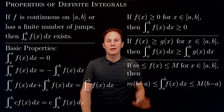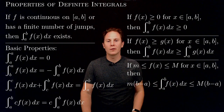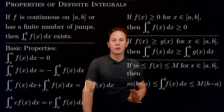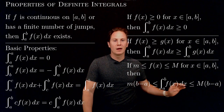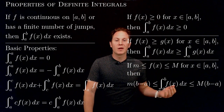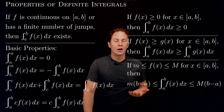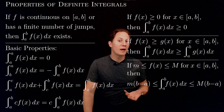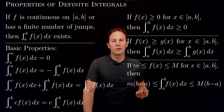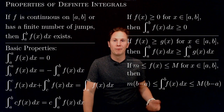If f(x) is between some minimum and maximum values, little m and capital M, along this closed interval, then the definite integral of f(x) from a to b is greater than or equal to m times (b minus a) and less than or equal to M times (b minus a). This expresses the fact that the region under the graph of the function is enclosed between two rectangles: one with base (b minus a) and height m, and the other with the same base but height M.